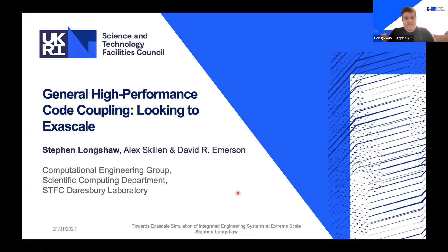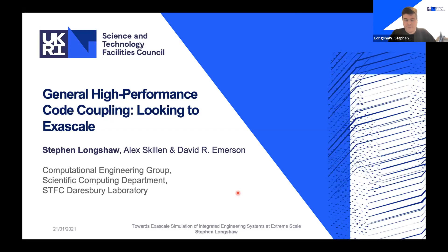I'd like to caveat this talk before I start. I'm going to present some work we've been doing around a code coupling library technology, and then present an example case of applying that to a notionally multi-scale software framework. The title says 'General High Performance Co-Coupling Looking to Exascale,' which is reasonable, but the actual examples presented are most definitely not exascale in nature. Everything we do is with exascale in mind, but the example shown is limited by the solvers, which have been chosen for reasons beyond HPC performance.